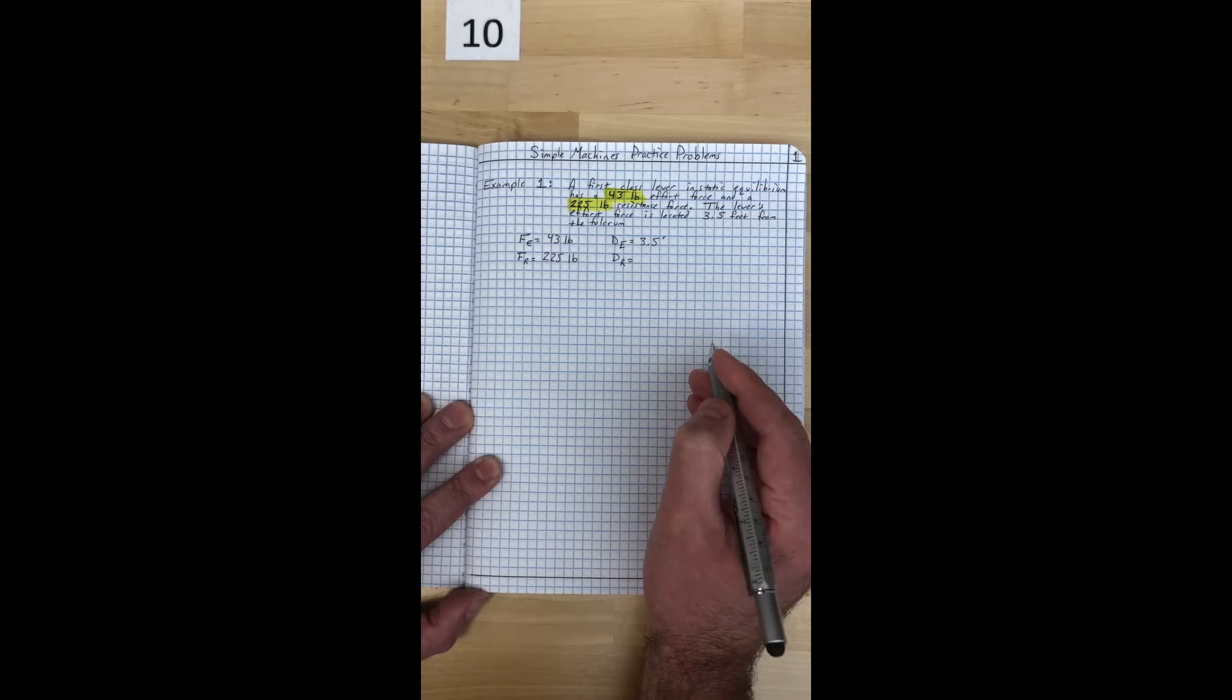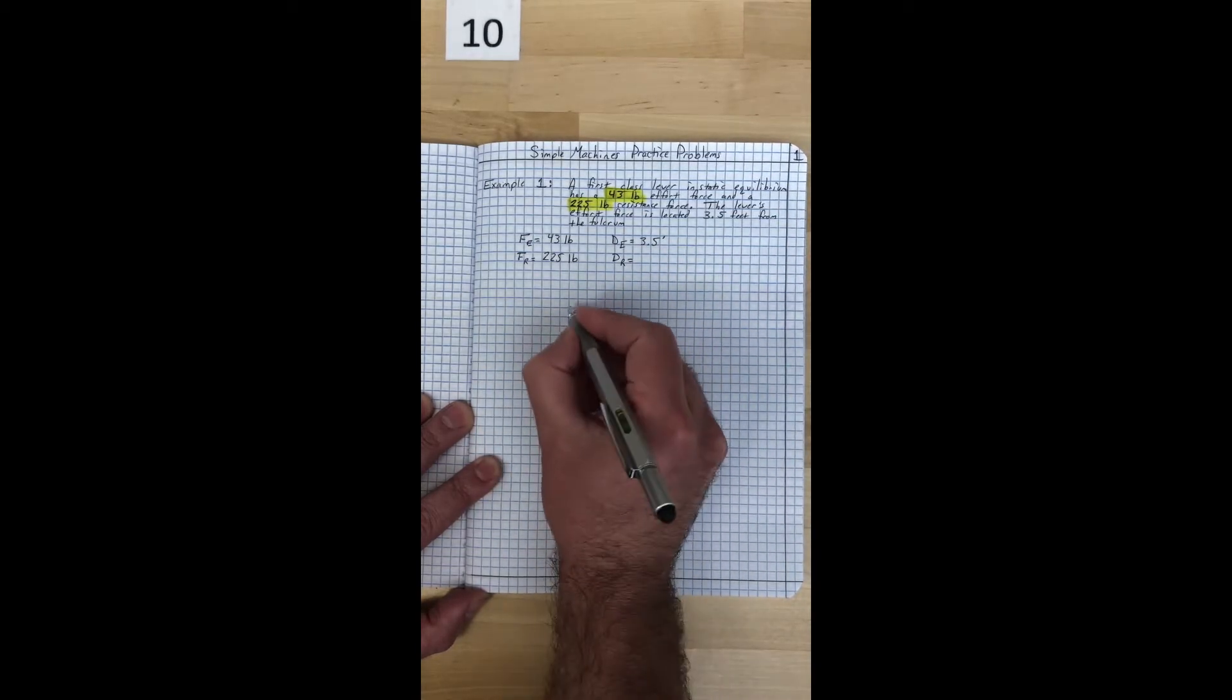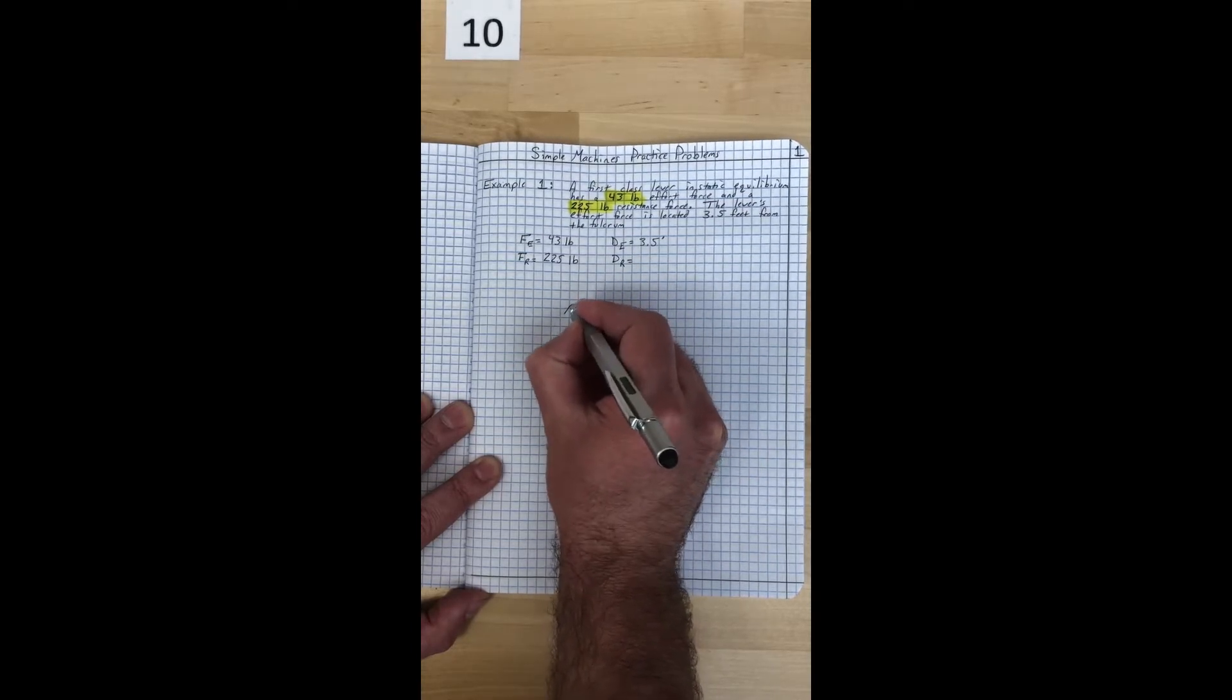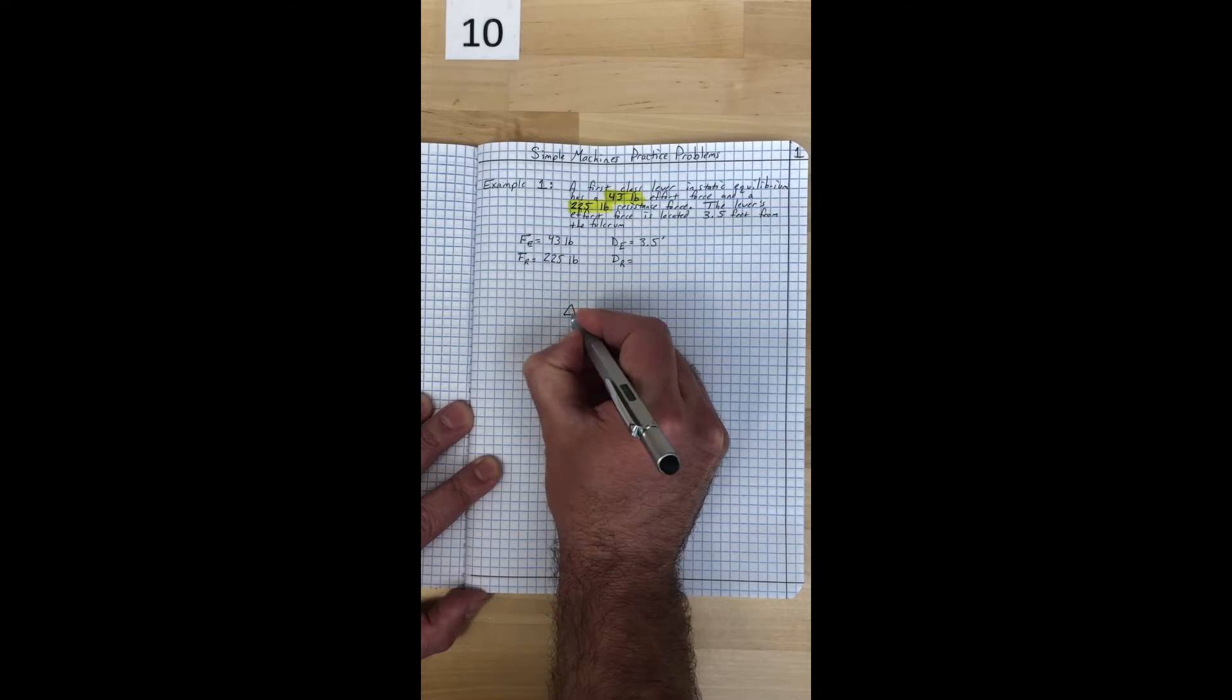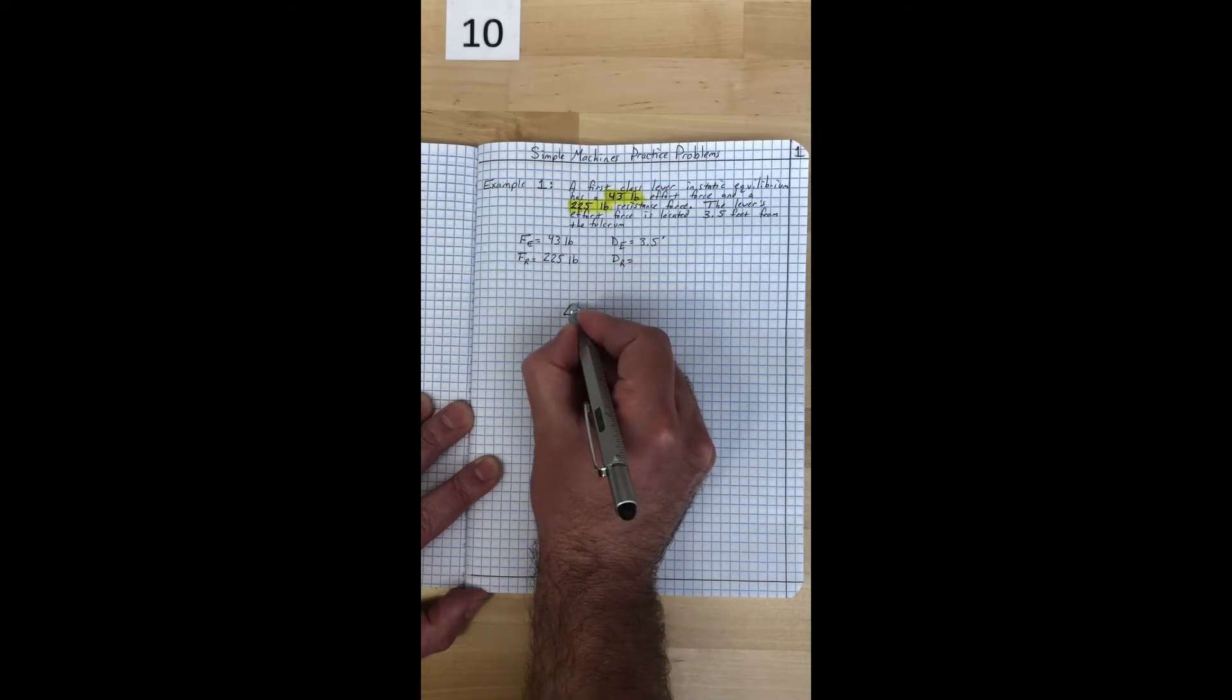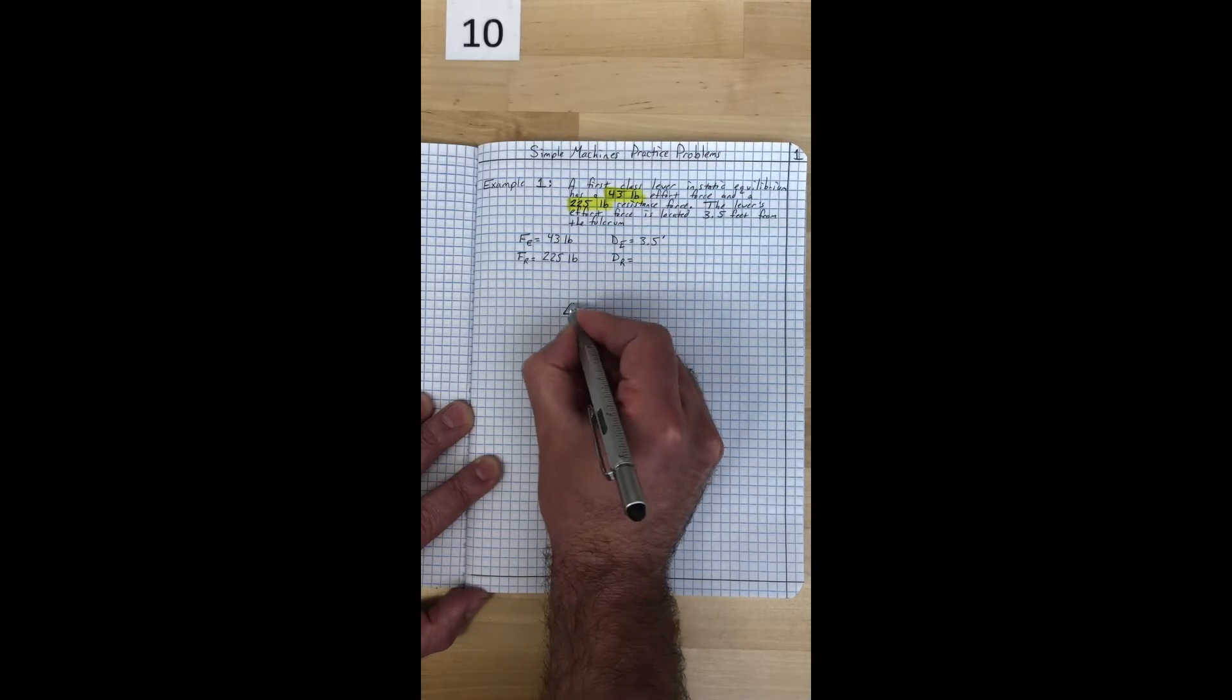Now we're ready to sketch this out. This is a first class lever, so the first class lever has a fulcrum not necessarily in the middle but in between its two forces that are going the same direction. This is the universal symbol for fulcrum, just a triangle.